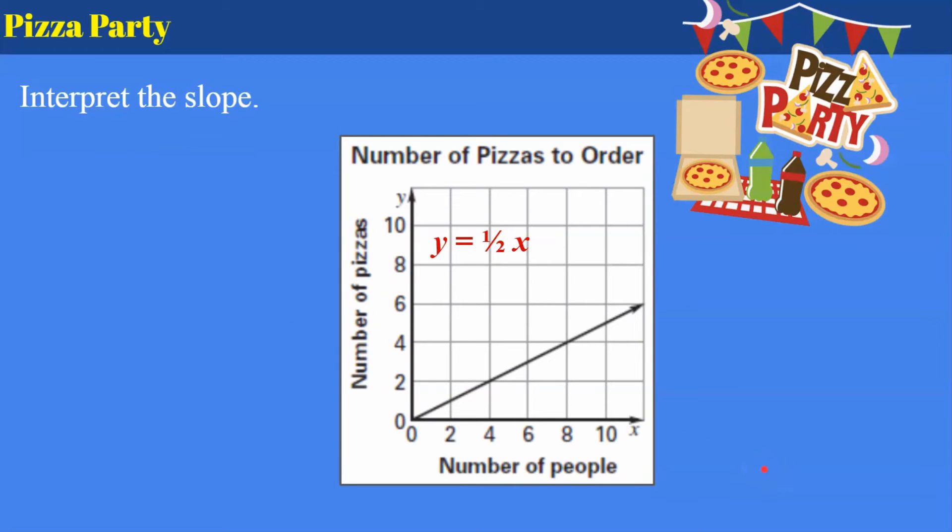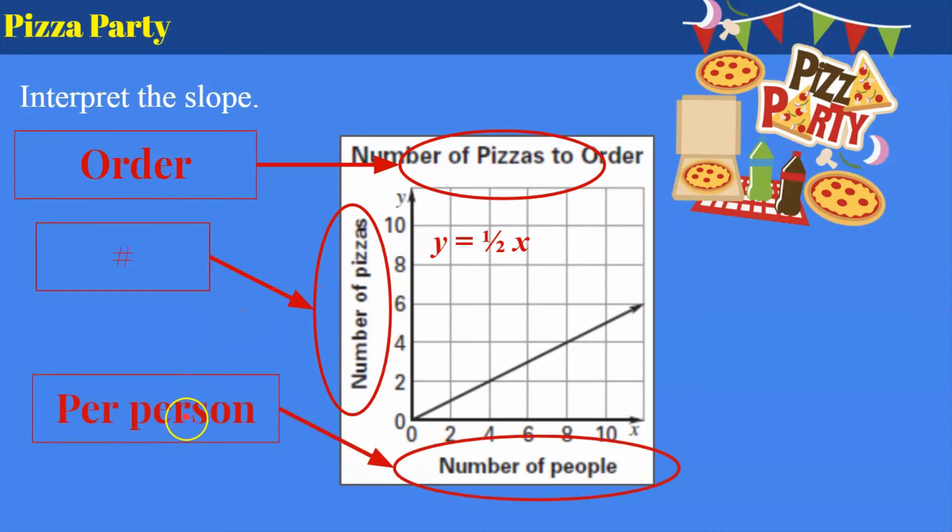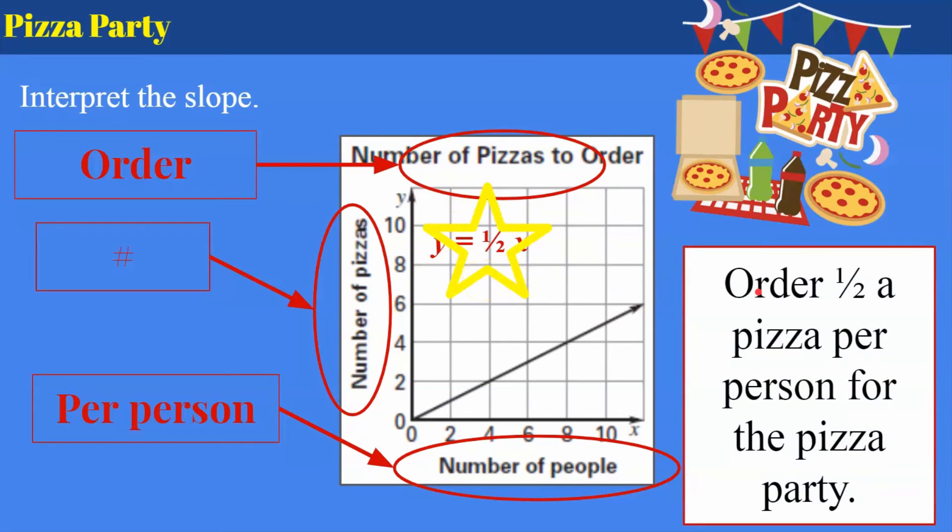All right, here's one for you to try. It's about a pizza party. I'd like you to pause, write your interpretation of the slope, and come back and hit play when you're ready to check your work. Welcome back. Let's see how you did. So hopefully you understood that it was pizzas that needed to be ordered, the number per person, and your slope is one half. So what does this mean? The slope of this line is you need to order half a pizza per person for the pizza party.